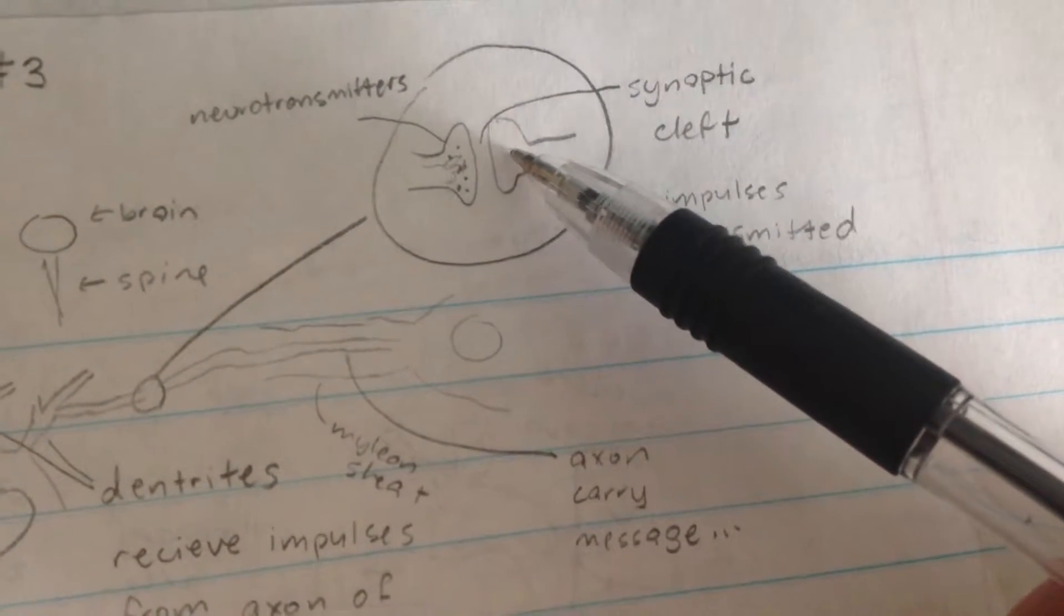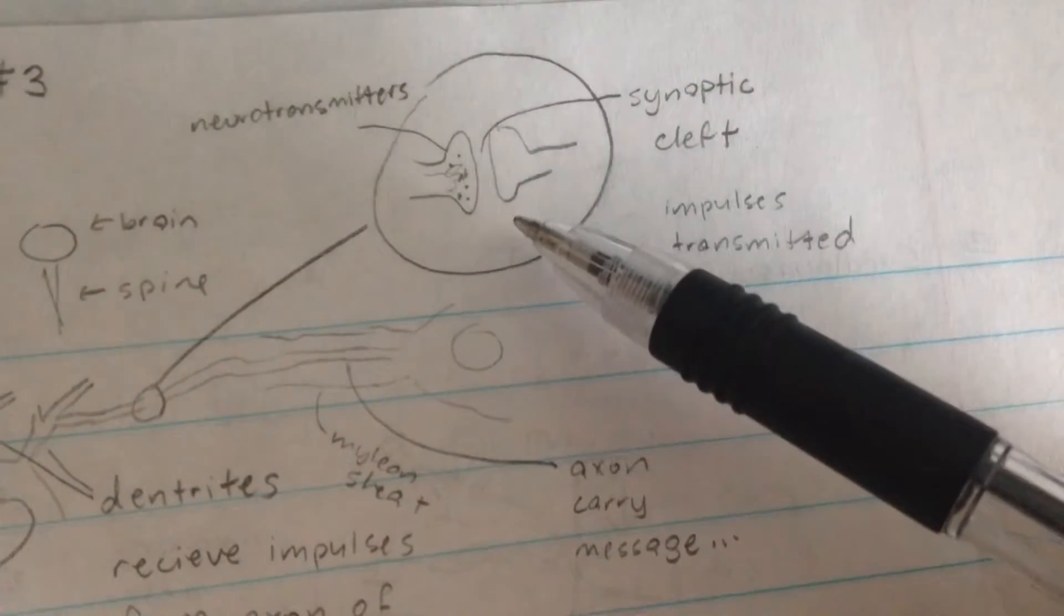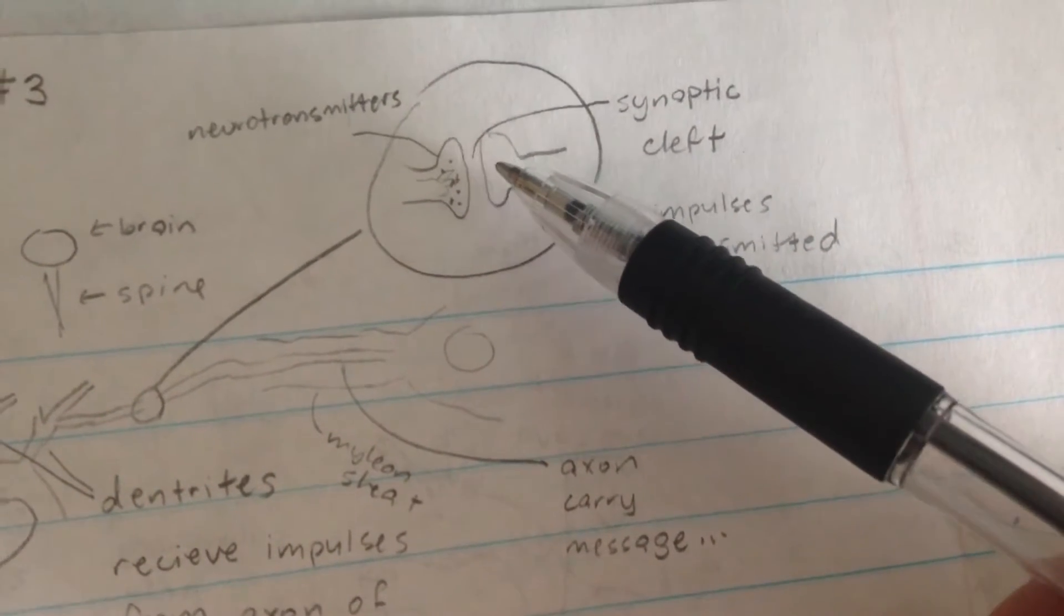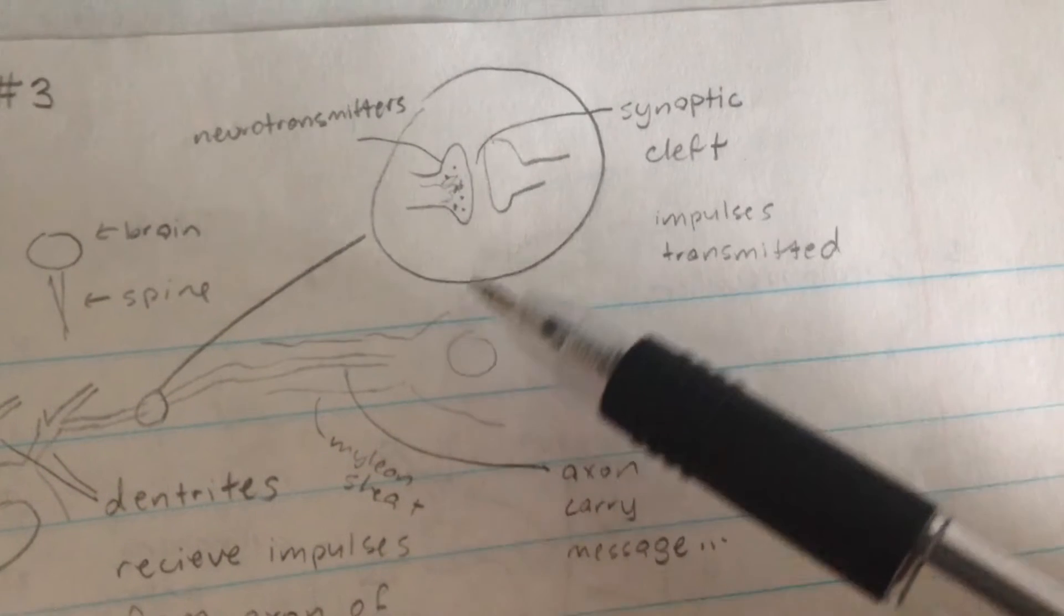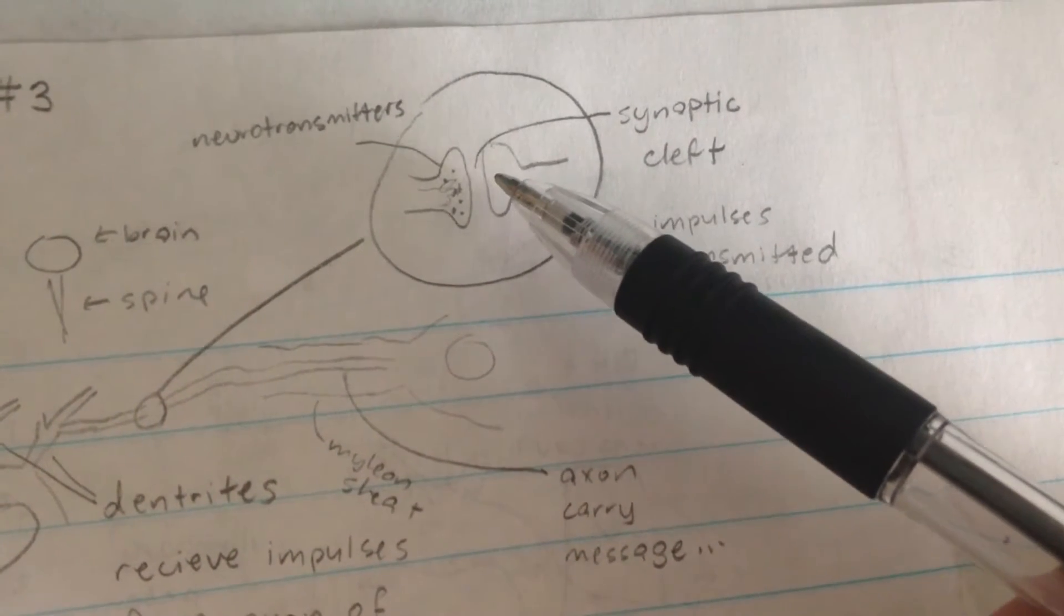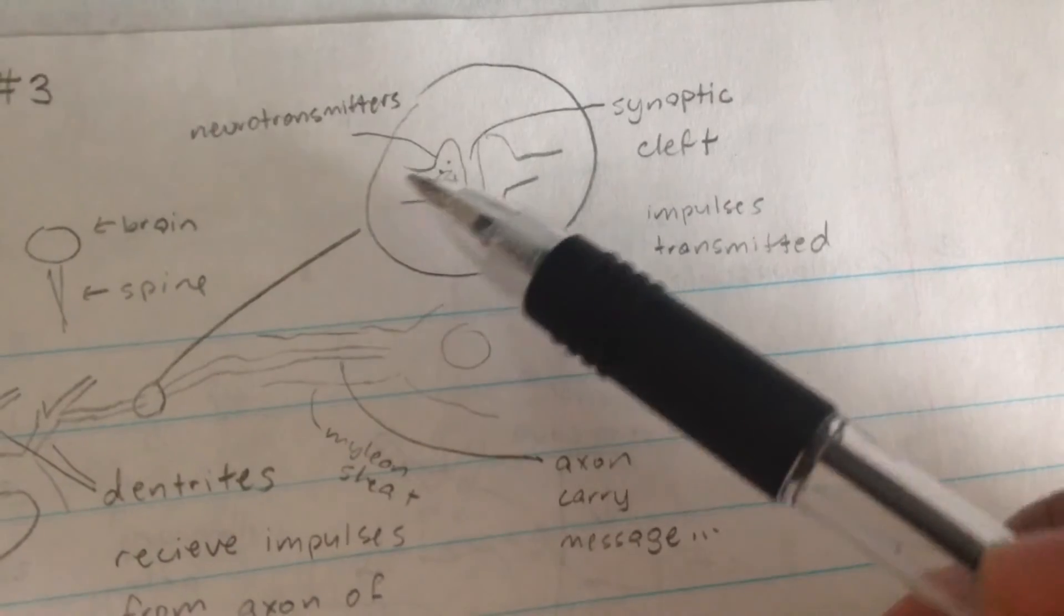And the message is something we call neurotransmitters, which could be anything such as hormones. The neuron on this side sends the neurotransmitters through the synaptic cleft and into this one.